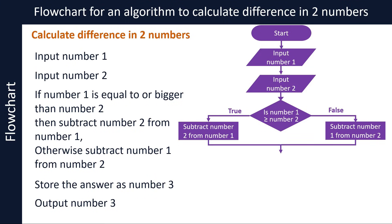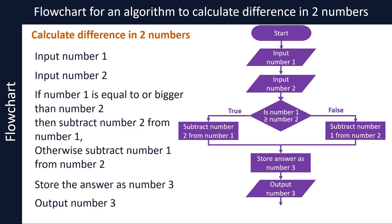Both paths lead to the next step: a process symbol that stores the result of one of the two subtraction operations in a third variable called number 3. The next symbol denotes output — we output the result stored in variable number 3, which is the value stored in the variable rather than the variable name. Finally, the last symbol denotes the end of the flowchart. Single-directional arrows throughout show the direction of flow in the algorithm.